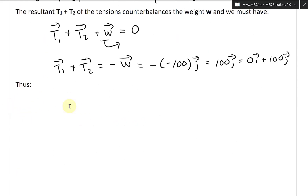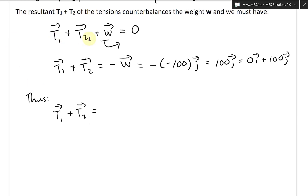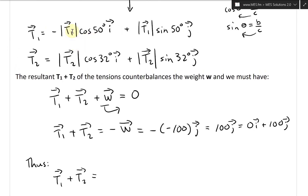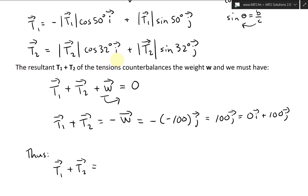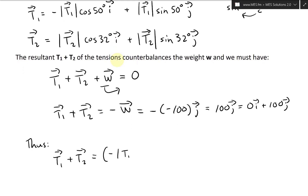Thus, adding T1 and T2 by factoring out the i and j components: [−|T1| cos50° + |T2| cos32°] i plus [|T1| sin50° + |T2| sin32°] j. The angles change from cosine to sine accordingly: T1 uses 50 degrees and T2 uses 32 degrees for each component.